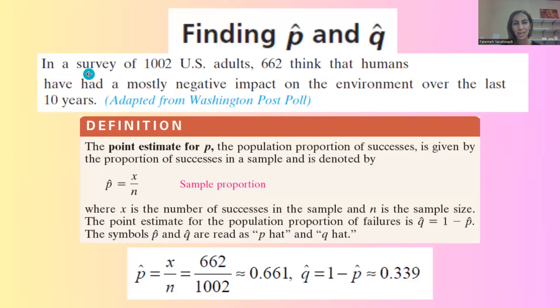To find P-hat and Q-hat for this question, we need to go over the definition first. The definition of point estimate for population proportion is P-hat equals X divided by N. In this question, we need to identify X and N.